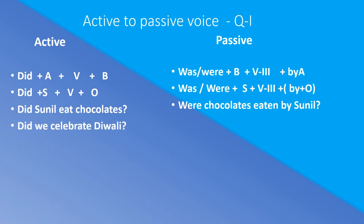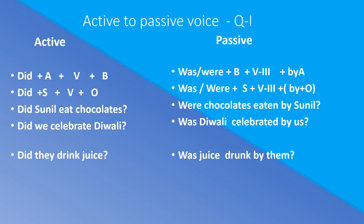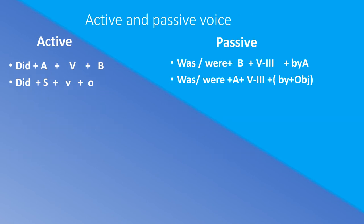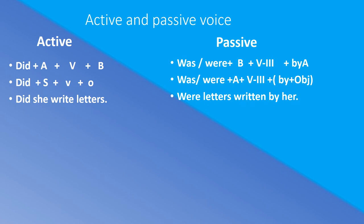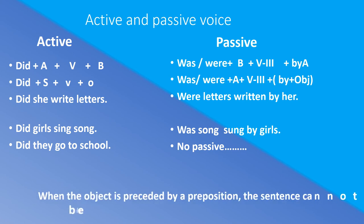Continuing Question Type 1 examples: 'Did they drink juice?' (Kya unhone juice piya?) → 'Was juice drunk by them?' (Kya juice unke dwara piya gaya?) 'Did she write letters?' → 'Were letters written by her?' 'Did girls sing a song?' → 'Was the song sung by girls?' 'Did they go to school?' → No passive voice, because there is a preposition before 'school.'